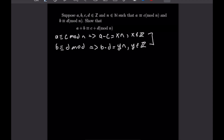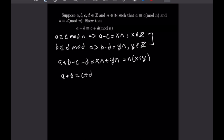Adding those two equations together gives a plus b minus c minus d equals xn plus yn, and factoring out n gives n times x plus y. Adding c and d to both sides gives a plus b equals c plus d plus n times x plus y. This says the difference between a plus b and c plus d is a multiple of n, which is exactly what we need to prove that a plus b is congruent to c plus d mod n.